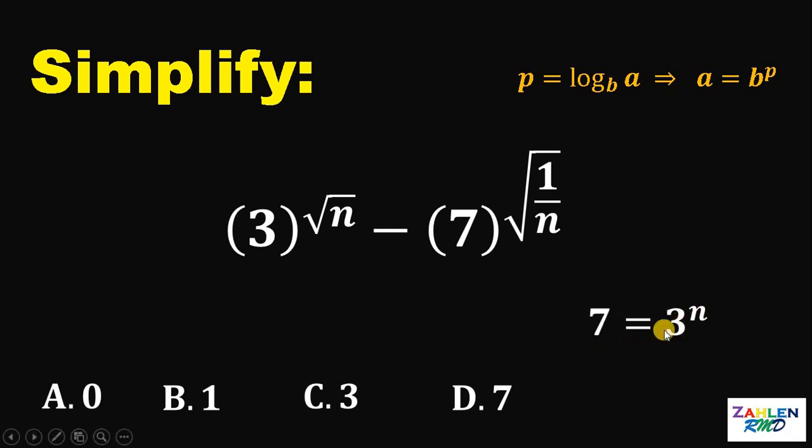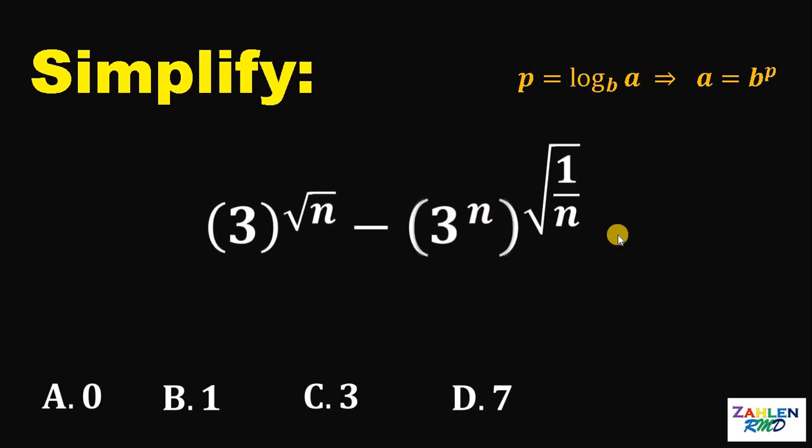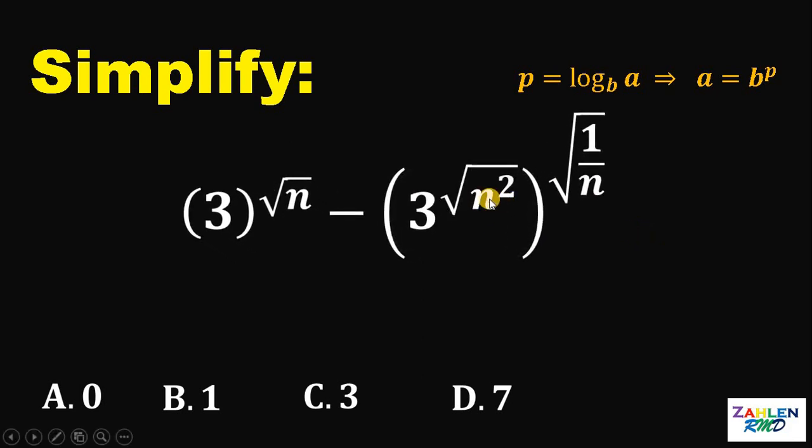Now, we know that 7 equals 3 raised to n. We have 7 right here, so we can replace this 7 with 3 raised to n. Now, at this point, we can rewrite this n as square root of n squared. This is just still n.